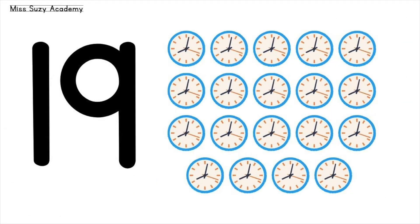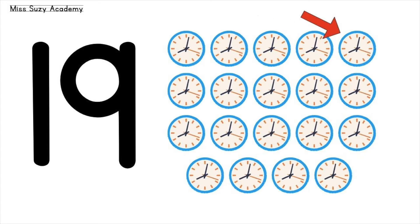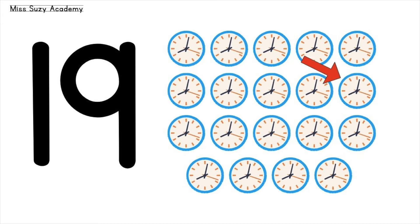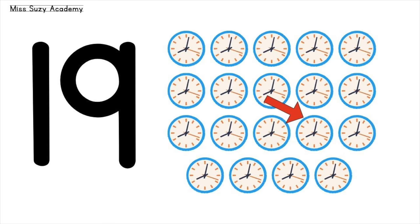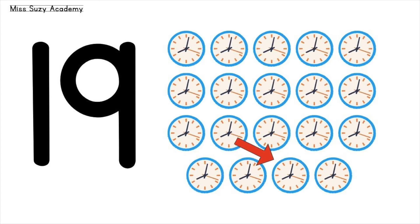19 clocks: 1, 2, 3, 4, 5, 6, 7, 8, 9, 10, 11, 12, 13, 14, 15, 16, 17, 18, 19. 19 clocks!